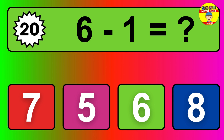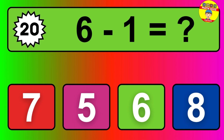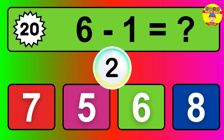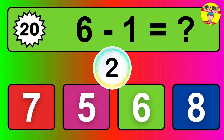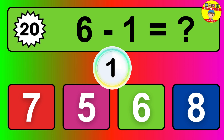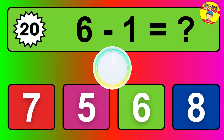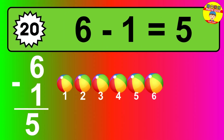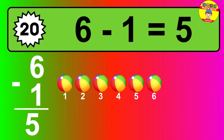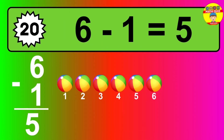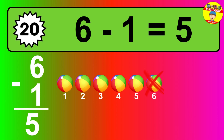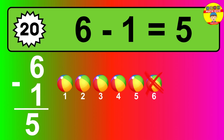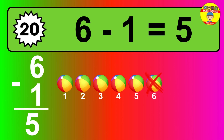Question 20. 6 minus 1 equals what? So the answer is 6 minus 1 is 5. Let's count it: 1, 2, 3, 4, 5.